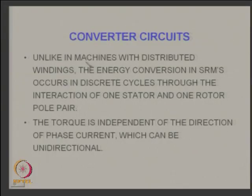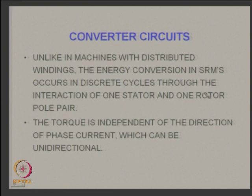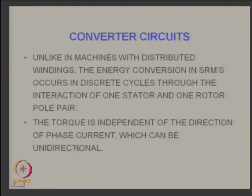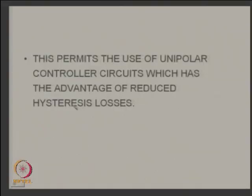Turning to practical controllers used for switching currents: in SRMs, energy conversion occurs through discrete cycles via interaction of one stator and one rotor pole pair. At any instant, only one stator winding and corresponding rotor pole pair interact to produce torque. Torque is independent of the direction of phase current — it is proportional to I². Current can be unidirectional, which permits the use of unipolar controller circuits, with the advantage of reduced hysteresis loss.